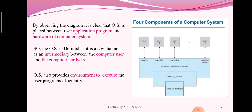Now we go for detail of this diagram. The first layer is the user layer where the end user is present, after that the user application programs, which also provides the user interface. Then after that the operating system, and the last one is the computer hardware. So we can say that the operating system provides an interface between the user application programs and the computer hardware, which provides an efficient environment for executing the user program easily.